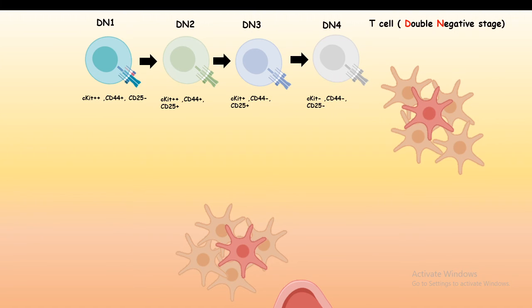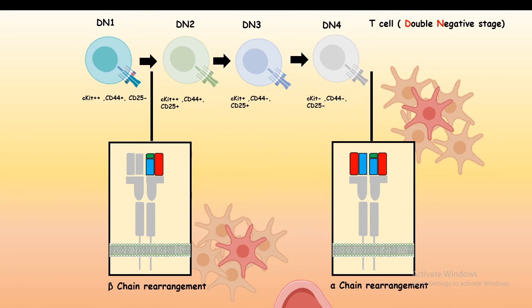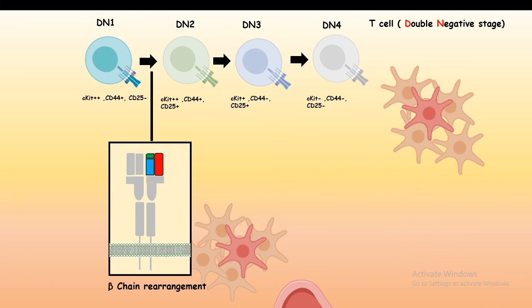After lineage commitment, T cells undergo several stages. First, a set of stages are known as the double negative stage. In this double negative stage, in the DN1 double negative stage 1 to double negative stage 2 transition, they undergo beta chain rearrangement. After that, after the double negative stage 4, they undergo the alpha chain rearrangement. So these alpha and beta chain rearrangements are happening at two different temporal points inside the thymus.